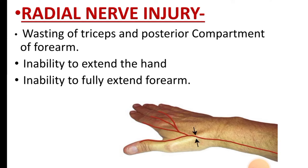Moving towards radial nerve injury: this involves wasting of the triceps and the posterior compartment of the forearm, inability to extend the hand, and inability to fully extend the forearm. This is the nerve supply territory of the radial nerve.